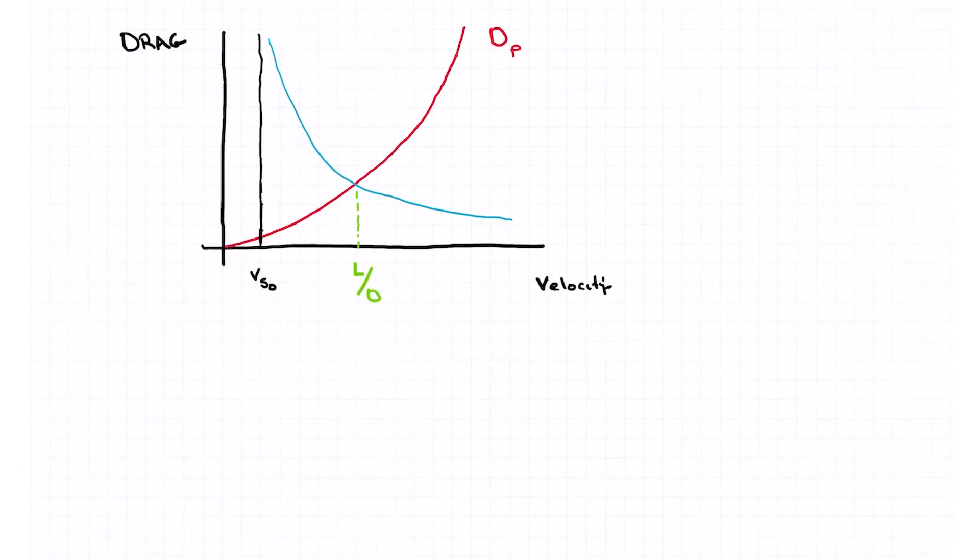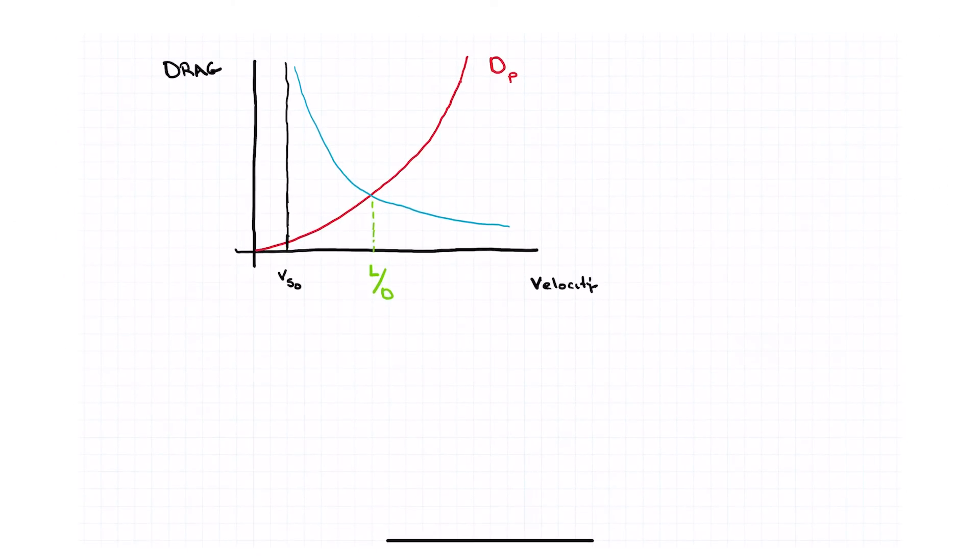So this is where we establish a best glide speed. Because if I lost an engine and I would glide at a faster speed, say I'm gliding at this speed right here, I would have more parasite drag. And if I was to glide at this speed here, I would have more induced drag.